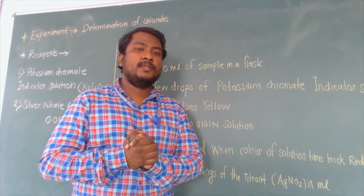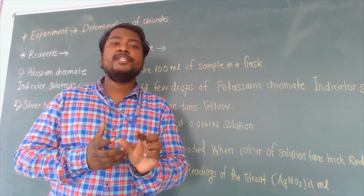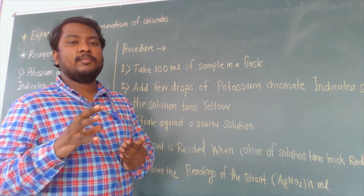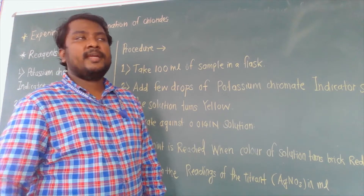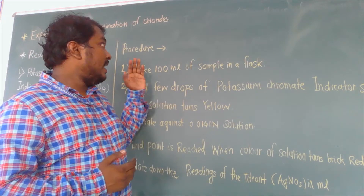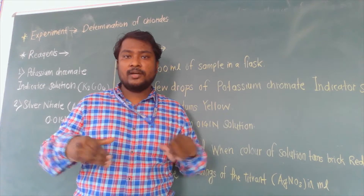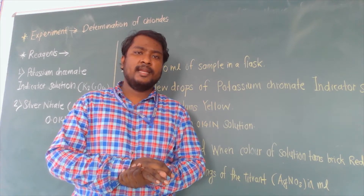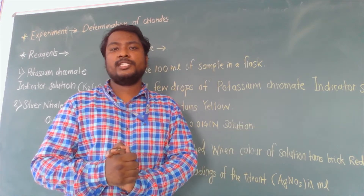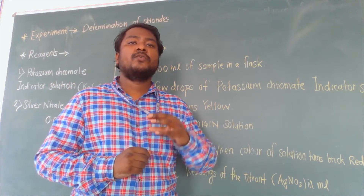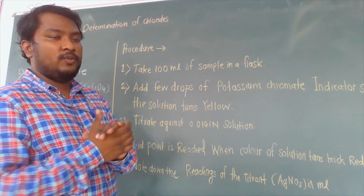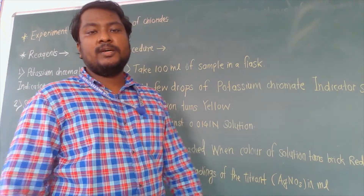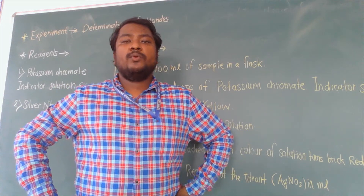Note down the burette reading at which you stop the titration — that is where you obtained the end point. At the end point, all the chloride ions present in the corresponding sample have reacted with the titrant in the presence of the potassium chromate indicator, and the brick red color remains. The color will not change further because all chloride ions in the 100 ml sample have been detected. The final step is to note down the readings of the titrant, AgNO3, in ml, and perform the further calculation.